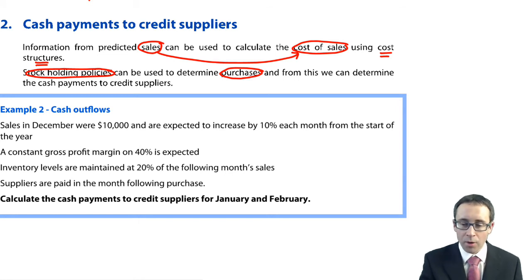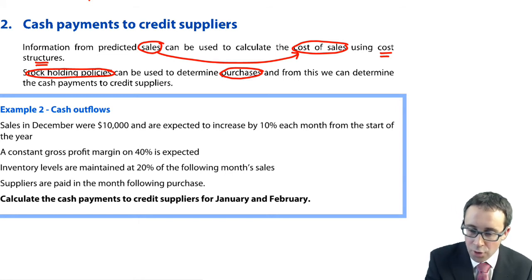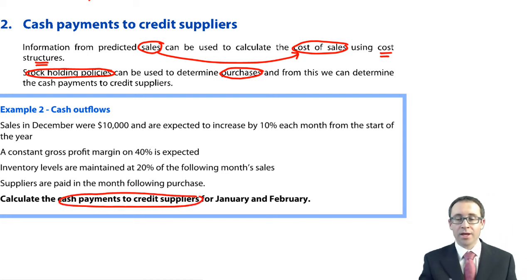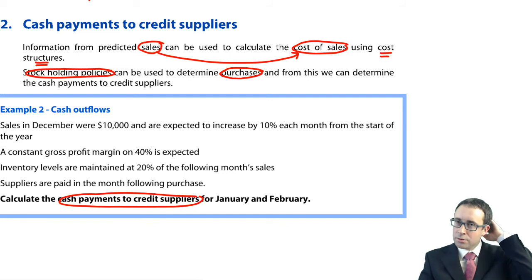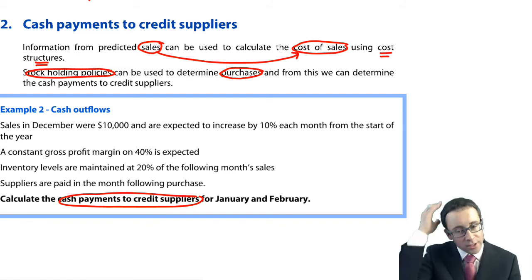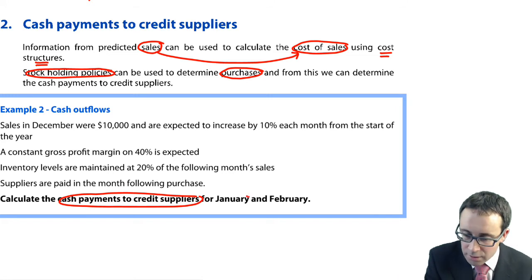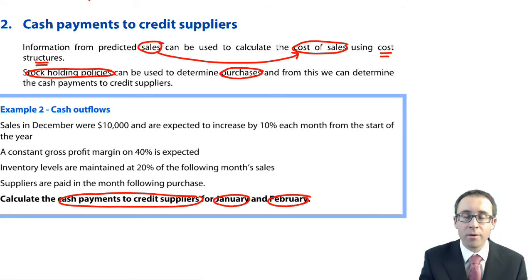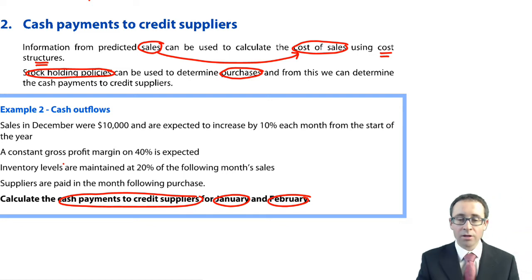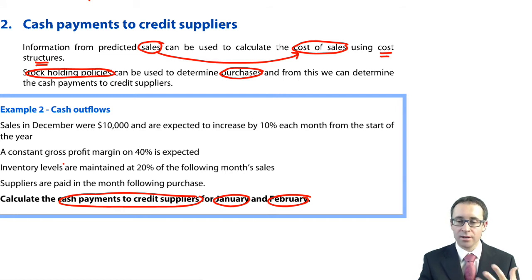This example wants the cash payments to credit suppliers — not your direct cash purchases, but specifically your credit suppliers — again for January and February. You can see we have exactly the same sales policy as before: 10,000 in December and a 10% increase for each month from the start of the year.